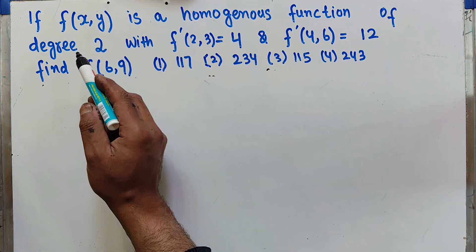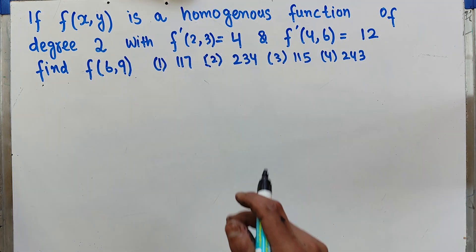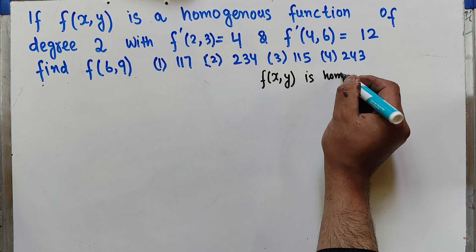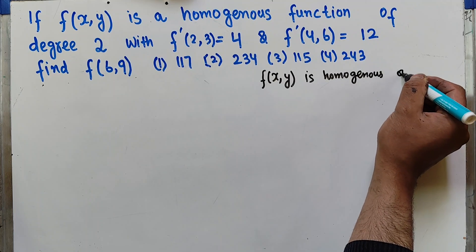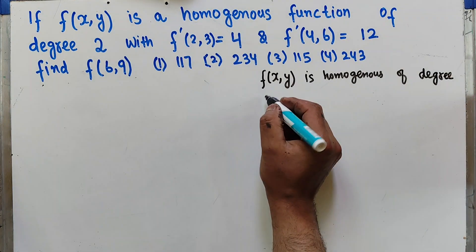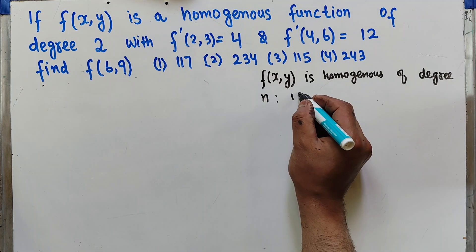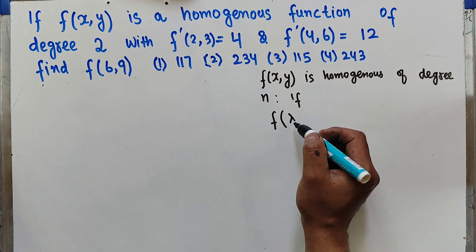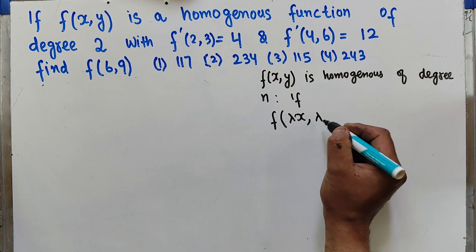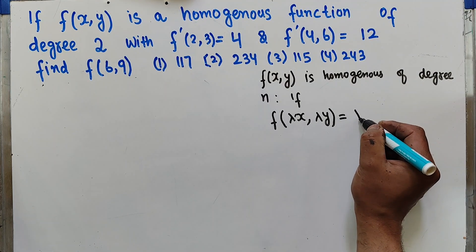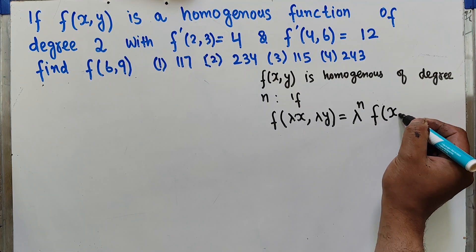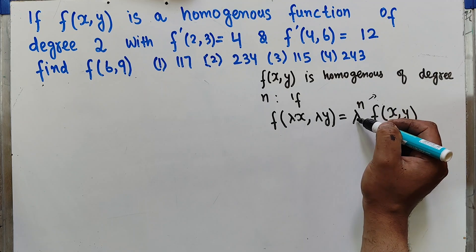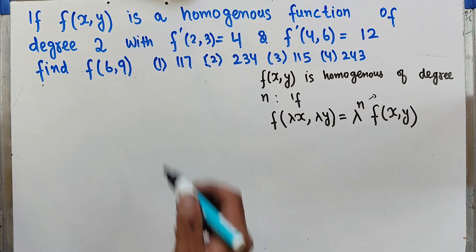We are told that f(x,y) is a homogeneous function of degree 2. In short, f(x,y) is homogeneous of degree n if, when I increase both x and y by a factor lambda, I can write the result as lambda raised to the power n times the original function f(x,y). This exponent of lambda denotes the degree of homogeneity.